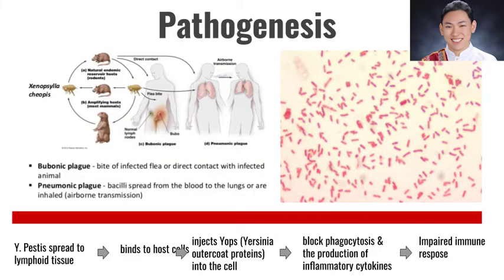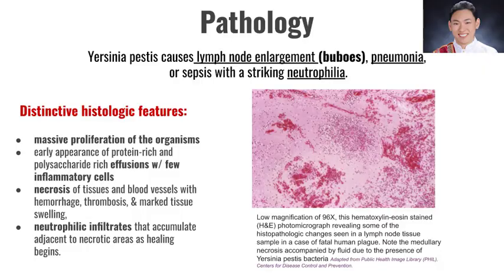For the pathogenesis of plague, we have bubonic plague, which comes from the infected flea, or pneumonic plague, in which the bacteria can be spread through aerosols. From the inoculation site, the bacteria spread to the lymphoid tissues where they can proliferate. The bacteria then bind to host cells and inject Yersinia outer coat proteins, which block phagocytosis and impair the immune response.